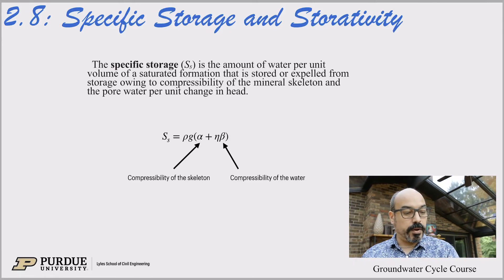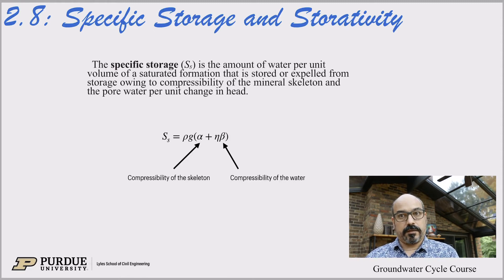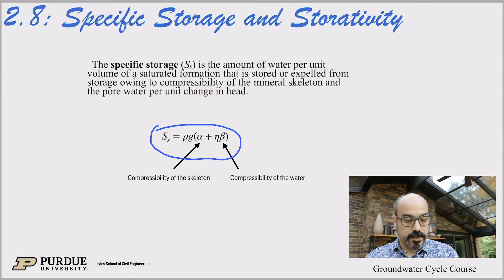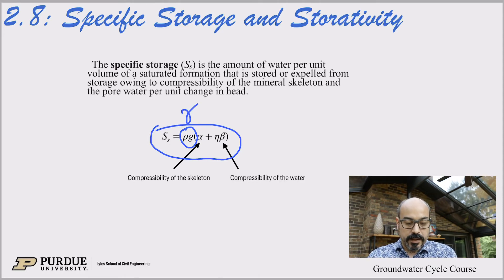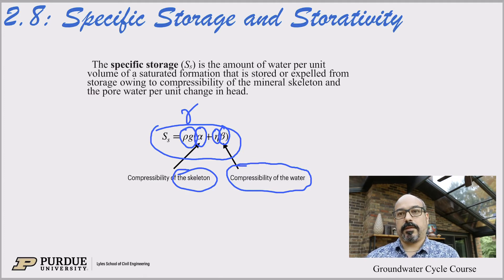Specific storage is the amount of water per unit volume of a saturated formation that is stored or expelled from storage owing to the compressibility of the mineral skeleton and the pore water, per unit change in head. In mathematical terms, specific storage equals ρg times (α + nβ), where ρg is the specific weight, α is the compressibility of the matrix, β is the compressibility of the water, and n is porosity.